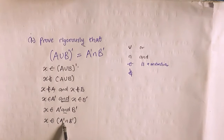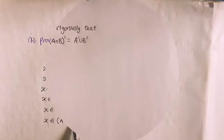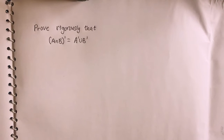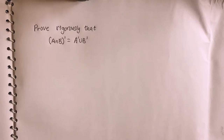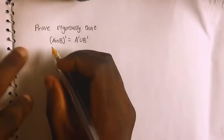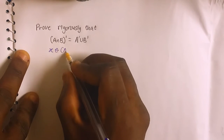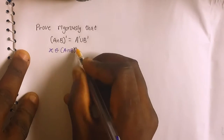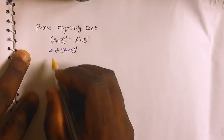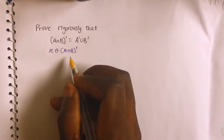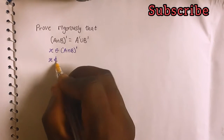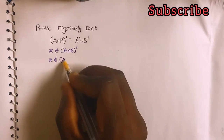Now let's prove rigorously that (A intersection B) complement equals A complement union B complement using the same procedure and De Morgan's Law. Let x be a member of (A intersection B) complement. Then if x is a member of (A intersection B) complement, that means x is not a member of A intersection B.